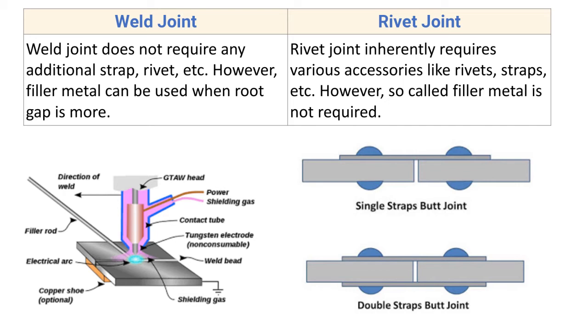Rivet joint inherently requires various accessories like rivets, straps, etc. However, filler metal is not required in riveting.